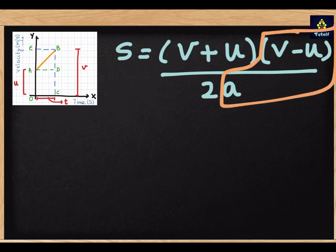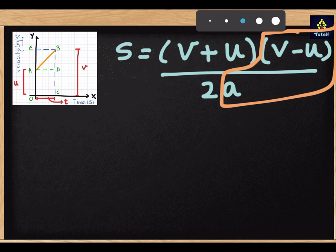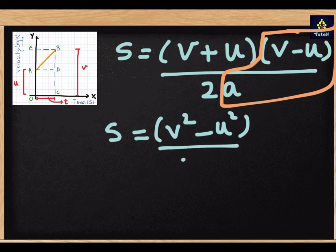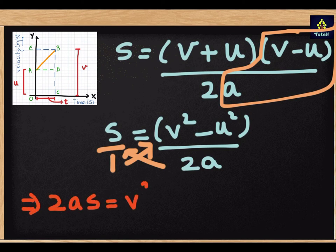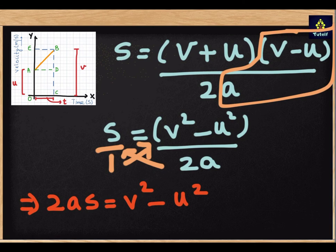Now A plus B, A minus B in the numerator will give me the identities there. So it will be V square minus U square. Now this S upon two A. What we will do now is the crisscross. So we have one here. We will multiply it there and two A will go here. So from that what I will get is two AS is equal to V square minus U square. This is also my third equation or my position velocity relation.